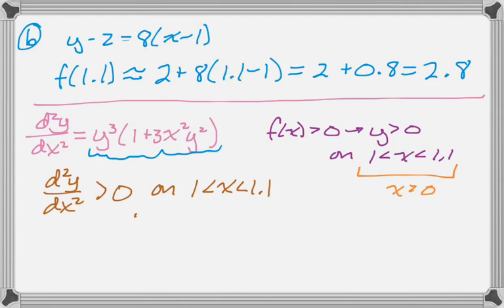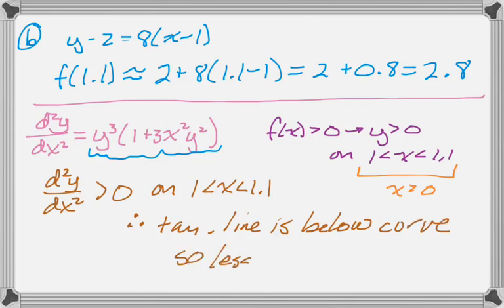And if the second derivative is positive, the function is concave up, which means the tangent line is below. And that means that our estimate is less than the actual value. So that's a pretty standard question. They just told you things in kind of a different way.